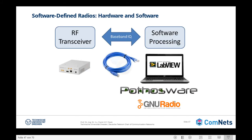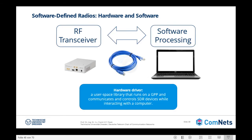When we want to communicate from our SDR, we have two different interfaces: USB and Ethernet. In the latest SDRs, all of them are equipped with an Ethernet interface because we can have data rates up to 1 gigabit per second in the transmission of data between the host computer and the radio frequency transceiver. To make this communication, we need a hardware driver — a user-space library that runs on a GPP processor such as Intel or AMD — which communicates and controls the SDR device while interacting with a computer.